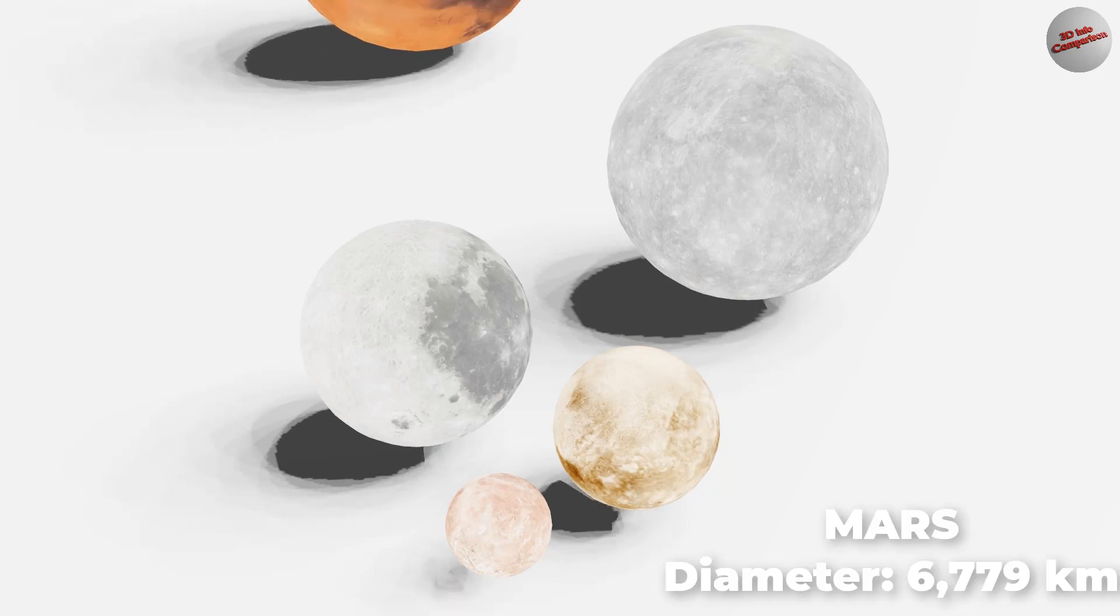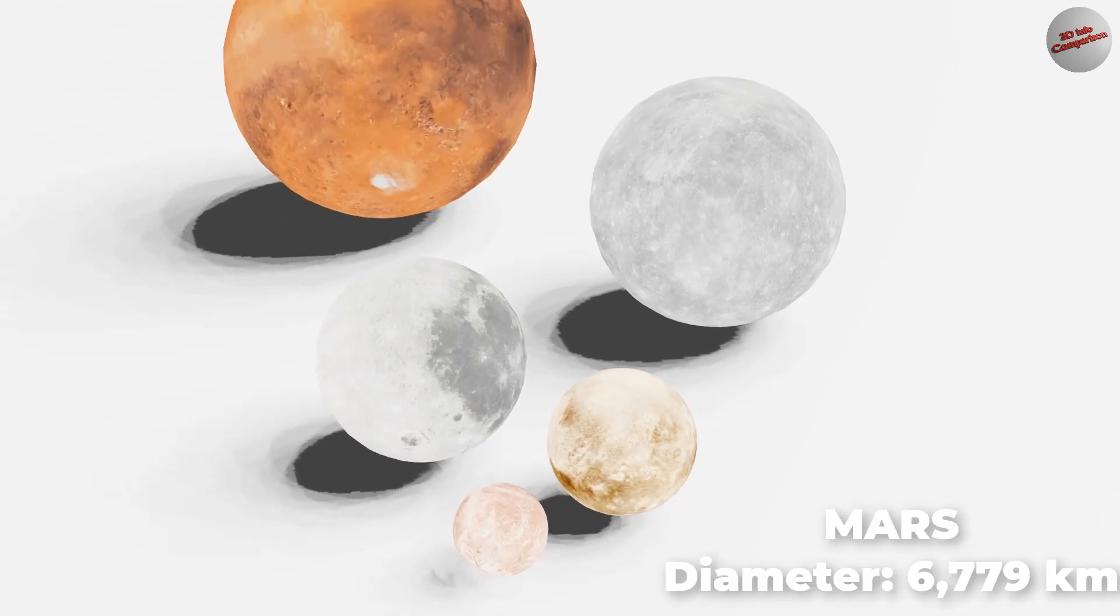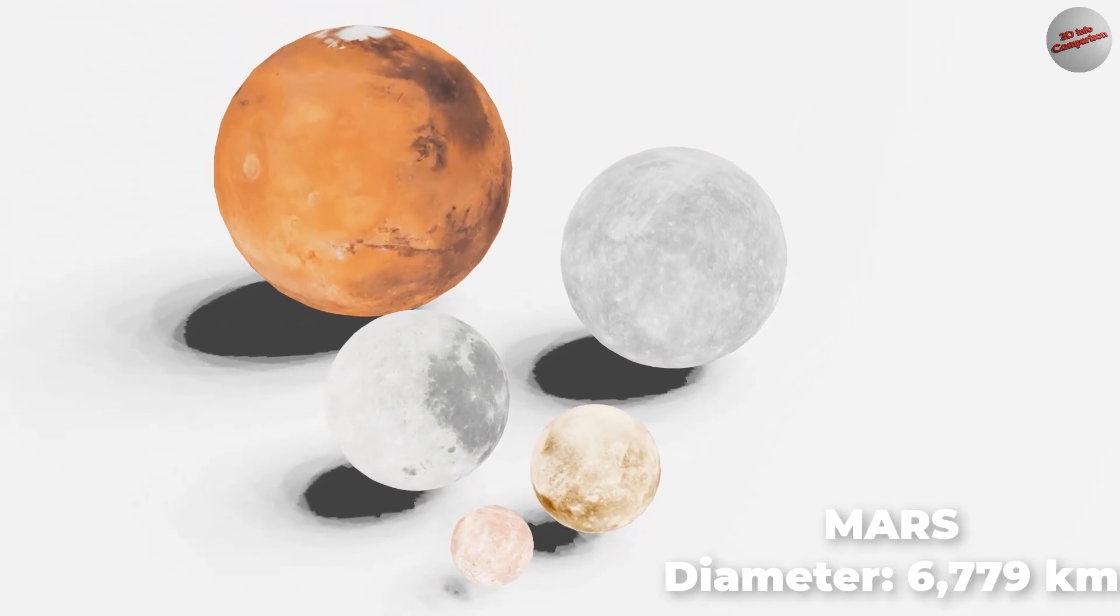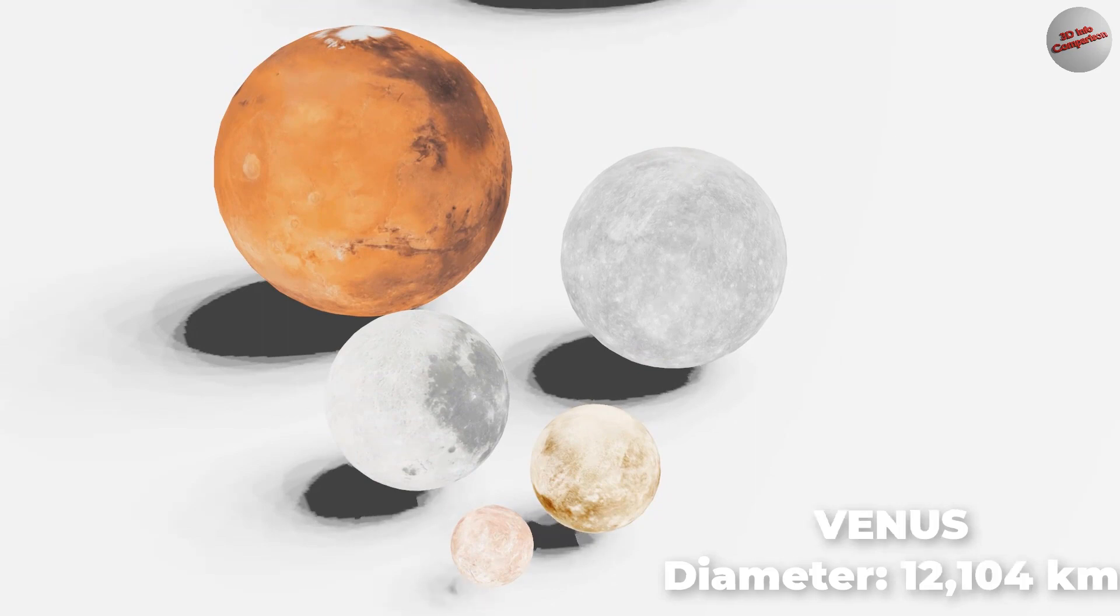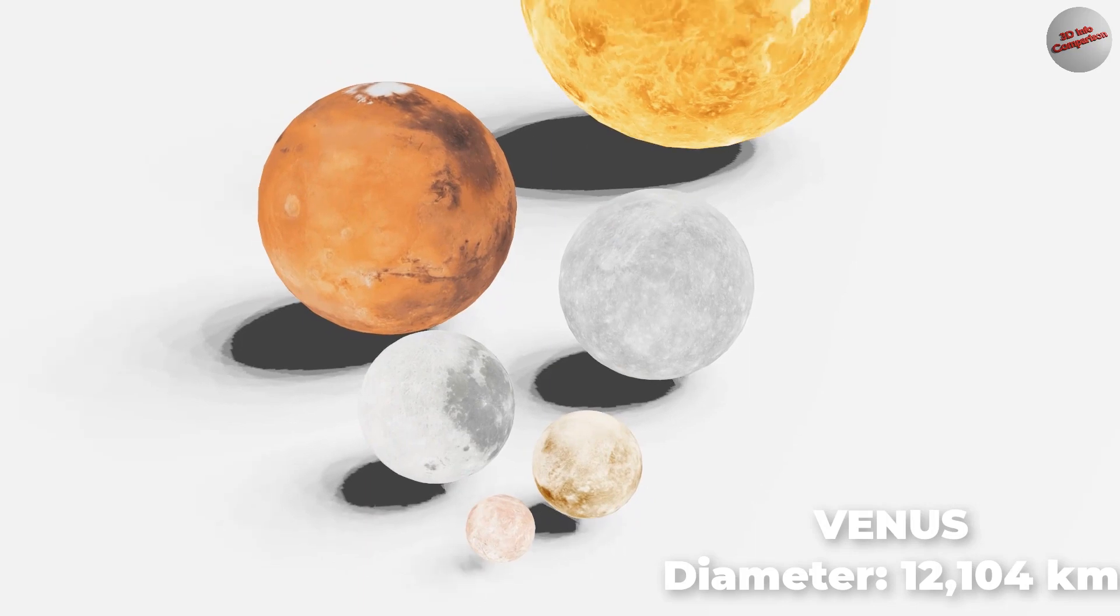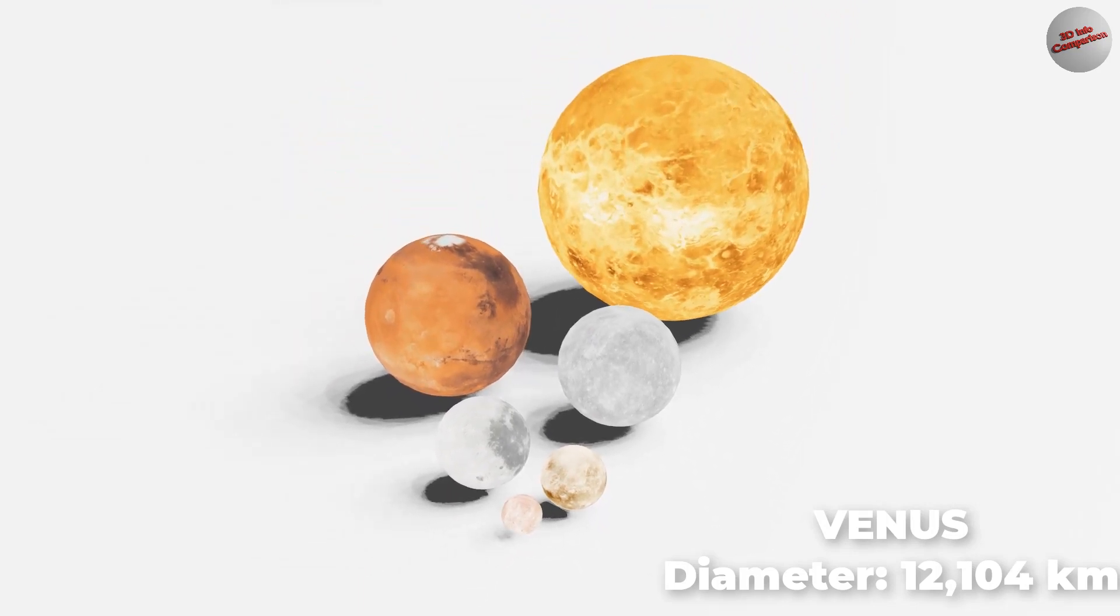Mars is the fourth planet and the farthest terrestrial planet from the Sun. Mars, called the Red Planet for the red color of its surface. Venus is the second planet from the Sun and the only terrestrial object in the solar system other than Earth.